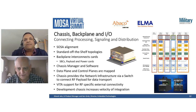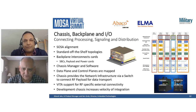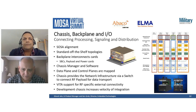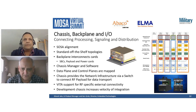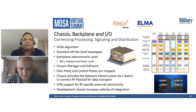Working with Abaco, Elma has RF SOCs, iOS PCs, and network switches capable of operating at 1, 10, 25 per lane, and up to 100-gigabit Ethernet — four times 25. Moving toward packaging and connectivity, this slide addresses chassis, backplane, and I/O for connecting, processing, and signal distribution.